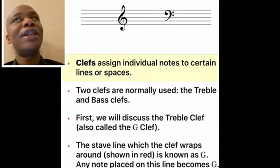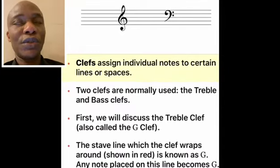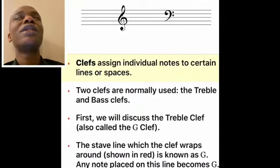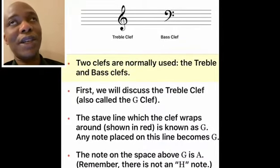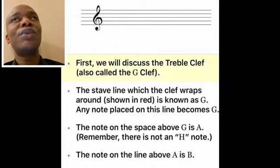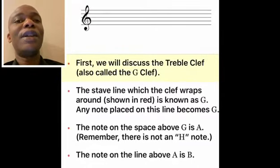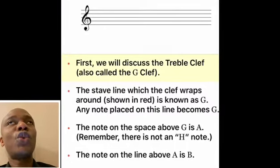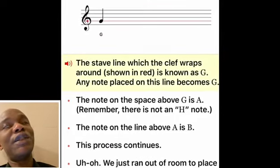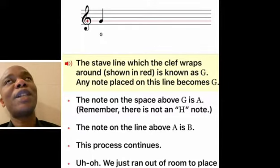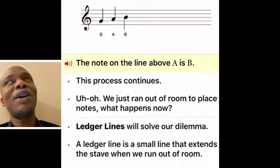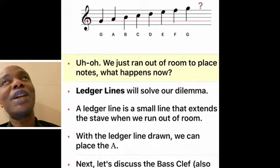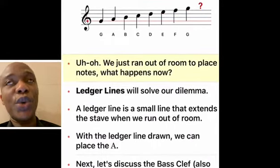Clefs are signs. We have lots of clefs but today we're going to look at treble clef and bass clef. The sign you see is a treble clef. It's also known as the G clef. On top of the line there is a space and that space is known as A. Remember, after G in the music alphabet we go on to A.